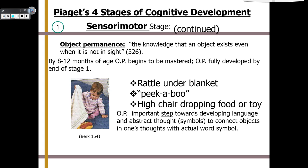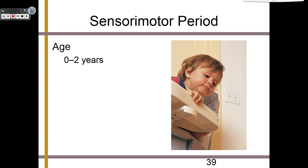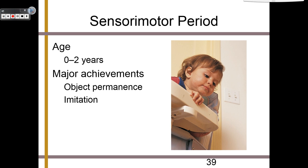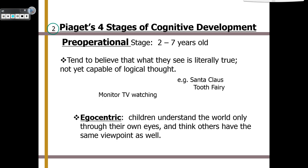The sensory motor period is from zero to two years old, with major achievements being object permanence and learning about imitation. The second stage is the pre-operational stage, from two to seven years old. During this time, children tend to believe that what they see is literally true, but they're not yet capable of logical thought. For example, they will think that the Tooth Fairy is real, that Santa Claus is real.